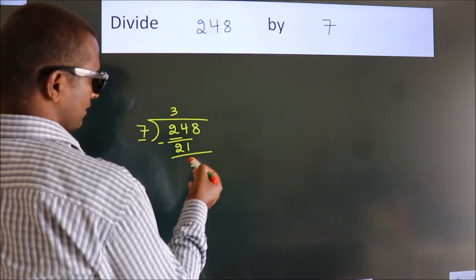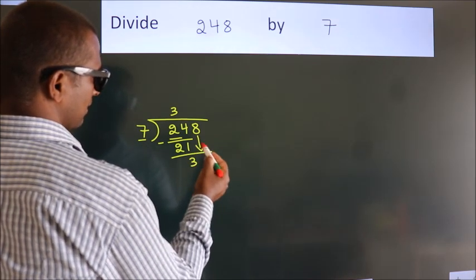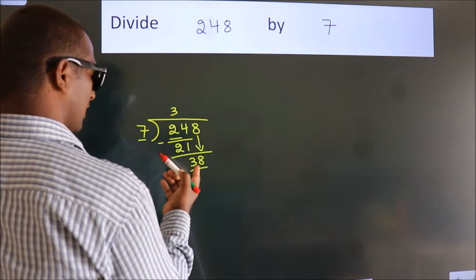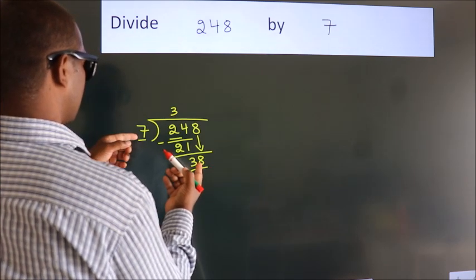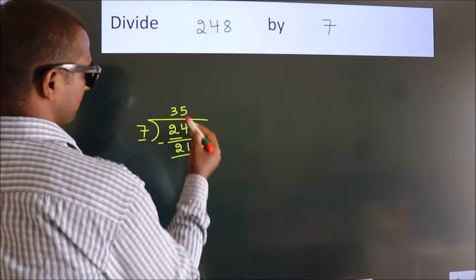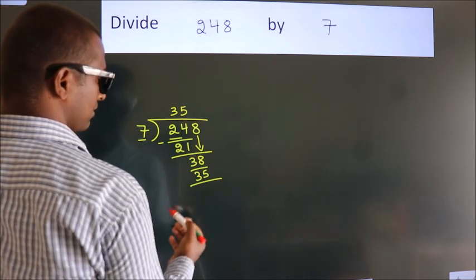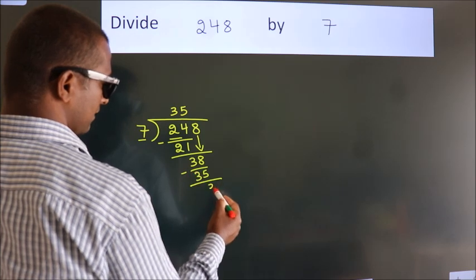After this, bring down the beside number. So 8 down, making 38. A number close to 38 in the 7 table is 7 fives, 35. Now we subtract. We get 3.